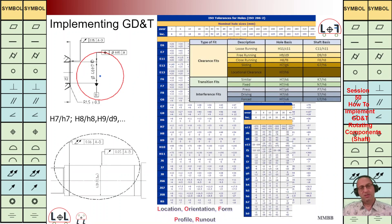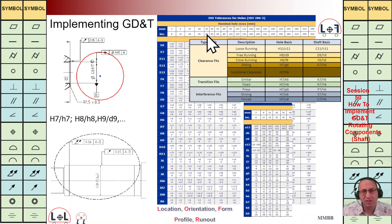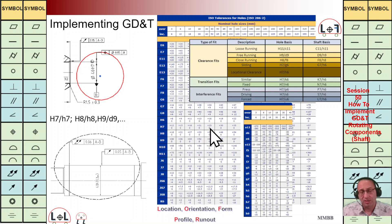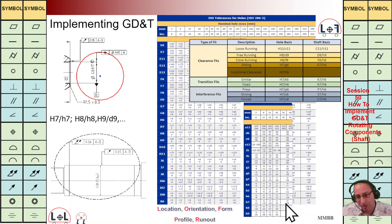Here again I'd like to talk about the tolerance h7 with a diameter of 40. Coming to the table, diameter 40 is included here; for H7 the hole tolerance is between 0 and +25 microns. For the shaft if it is h7 and 40mm, it is 0 and minus 25 microns.